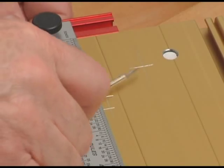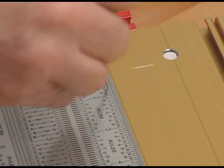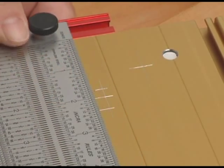And remember, any of the INCRA rules can be used for marking metal by simply using a sharp scribe.